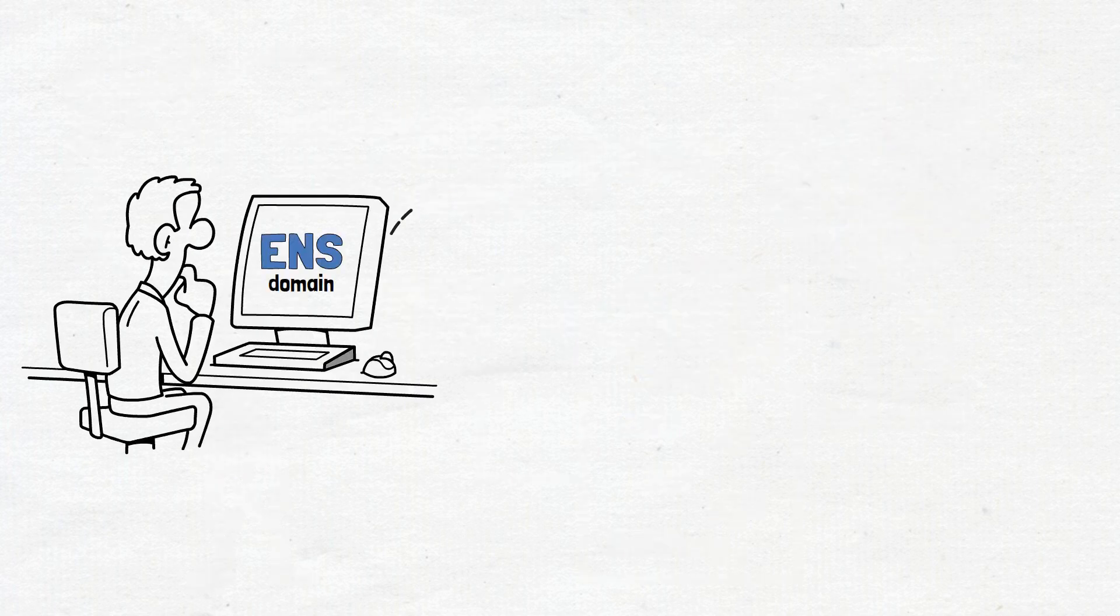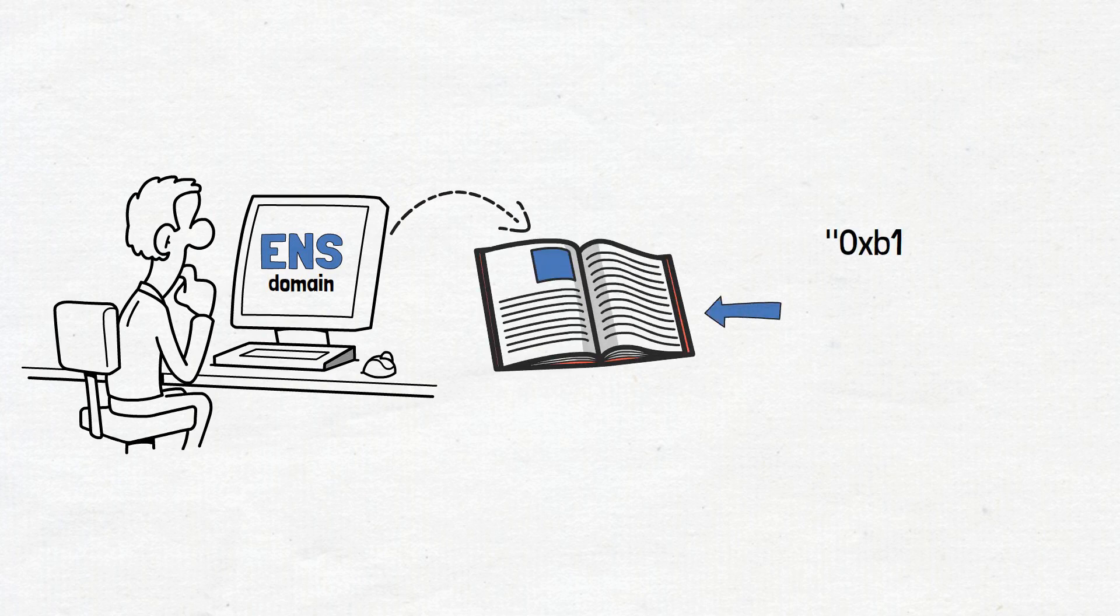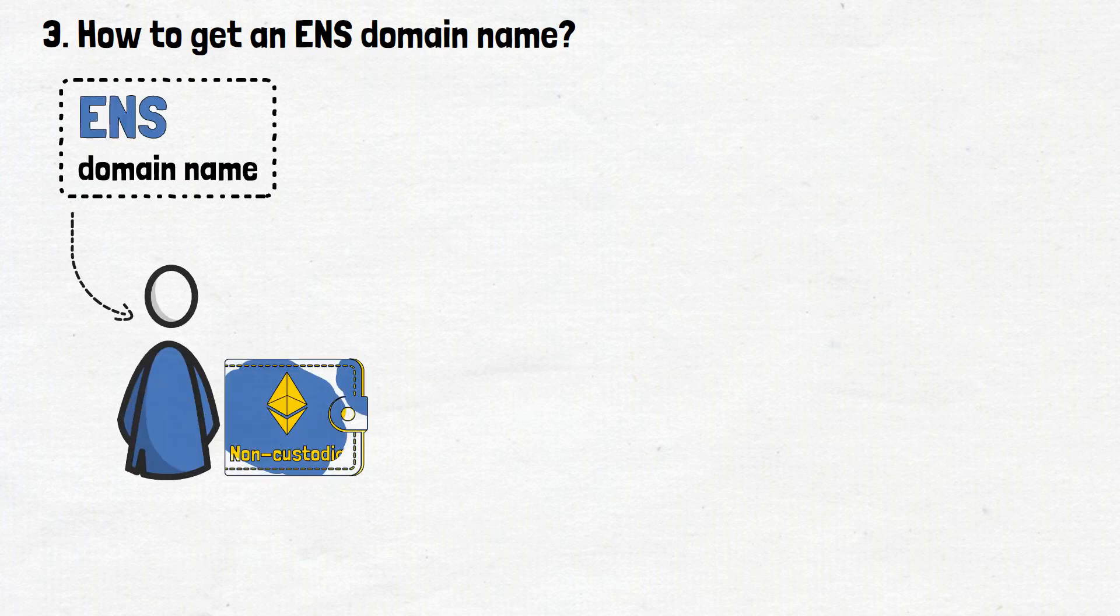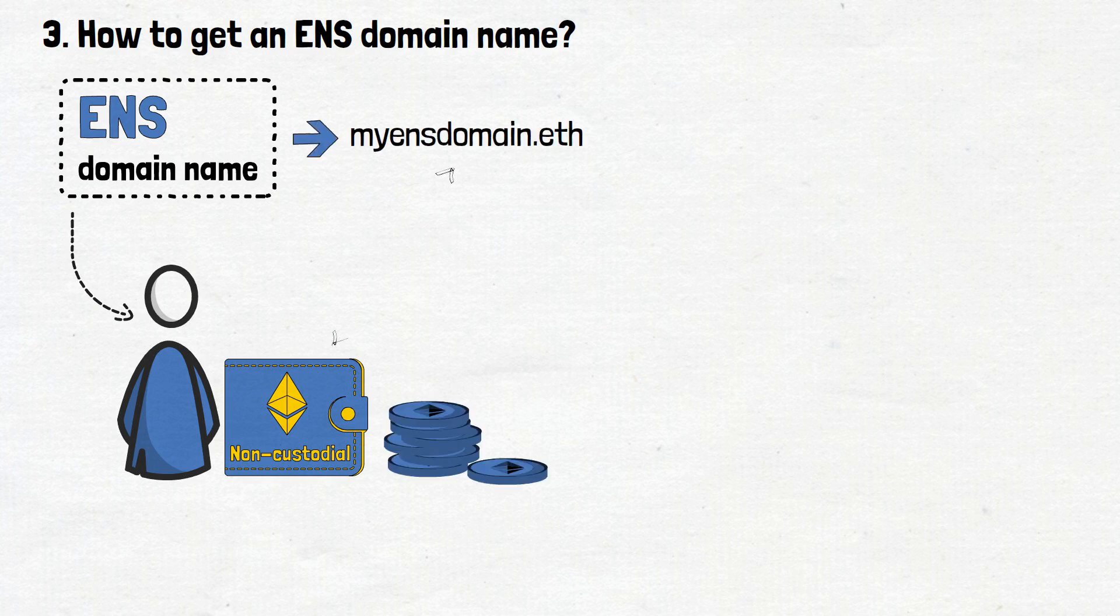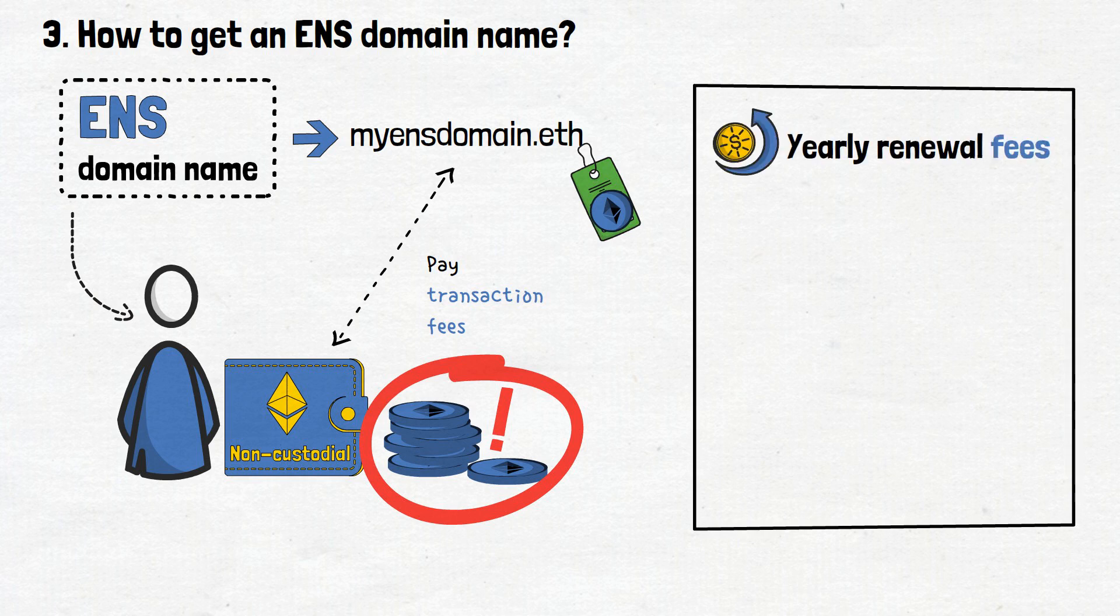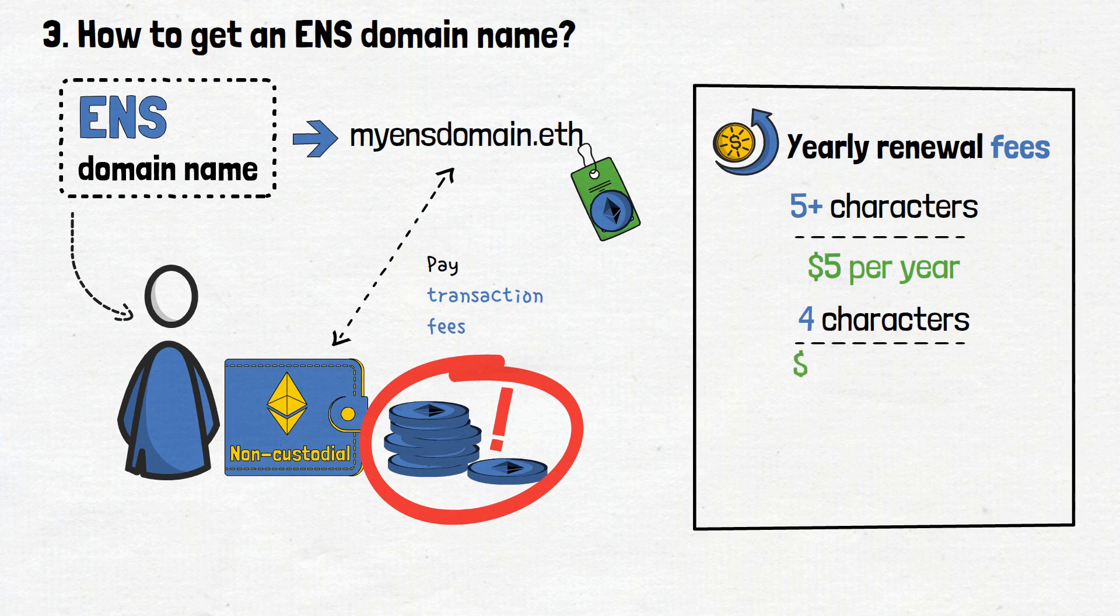So, to summarize what is an ENS domain, we can simply say that it is a human-readable version of the originally extremely long crypto wallet address. Now, let's answer the questions of how you can get an ENS domain name, and how to use an ENS domain. To get an ENS domain name, users must first own a non-custodial Ethereum wallet and some Ether. The wallet will be used to link the user domain name on ENS and help purchase the actual domain. Ether is necessary to purchase the domain and pay transaction fees. It is worth noting that ENS domains have yearly renewal fees. In particular, domain names with 5 characters or longer cost users around $5 per year. Investors who want to hold a domain name with 4 characters have to pay $160 per year, while names with only 3 characters cost a whopping $640 per year.